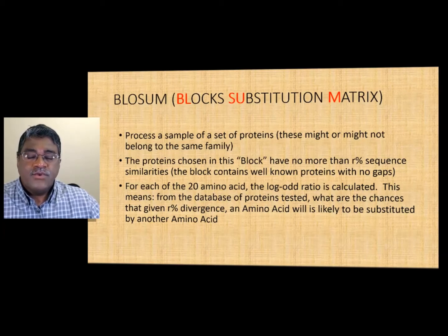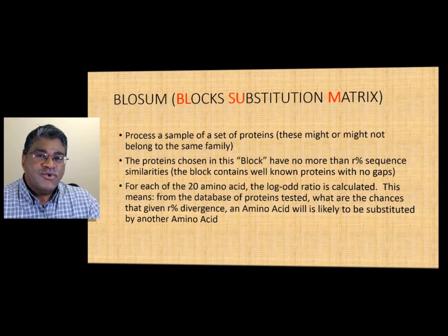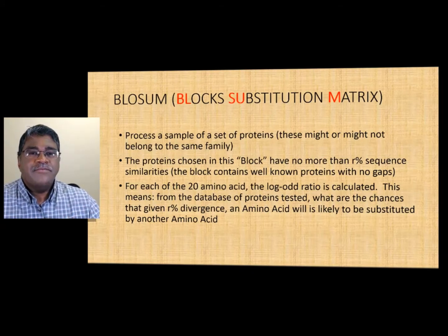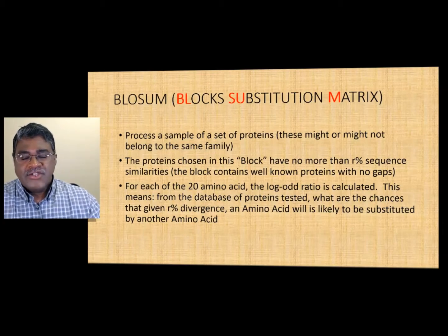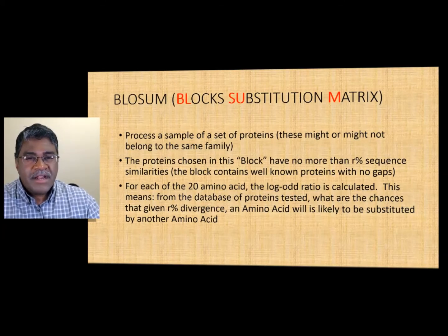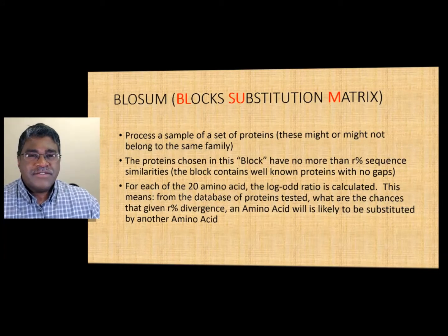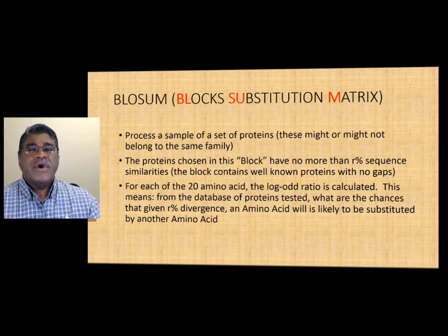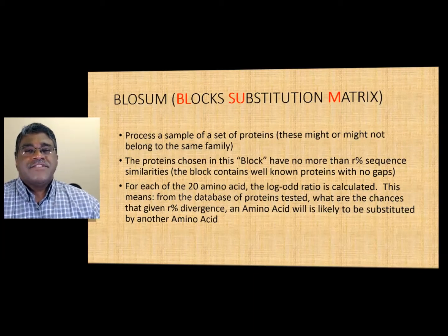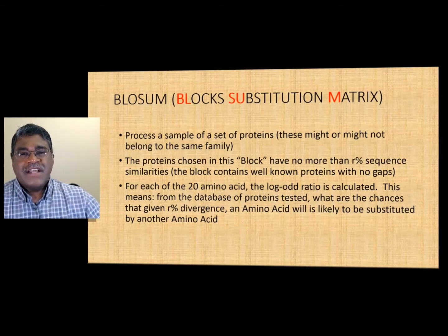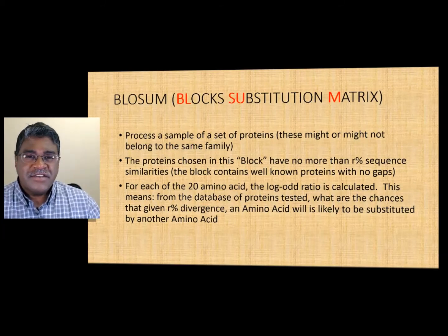Going back to the affine gap penalty exercise, that was called BLOSUM 62, meaning those similarity scores came from a set of proteins whose similarity was not greater than 62%. BLOSUM 62 is a middle-ground matrix and is most commonly used. You can also have BLOSUM 30 or BLOSUM 80. The choice of matrix depends on the kind of similarity searching you intend to do — if sequences are relatively divergent, use a lower BLOSUM number.